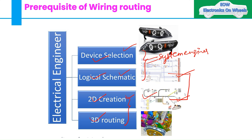The fourth role is 3D routing, where the engineer routes the harness in a 3D environment. Today we will discuss the prerequisites in 3D routing. You use tools like Pro/E, CATIA, UG NX, and so on. We will not discuss the tool itself but what things you have to take care of when routing your wiring in a car.